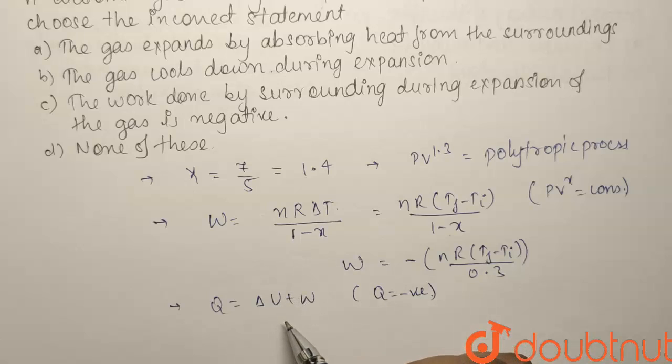Now, delta U is negative. It means that the internal energy of the system is decreasing. So, where does this internal energy go? It goes in the heat of the system.